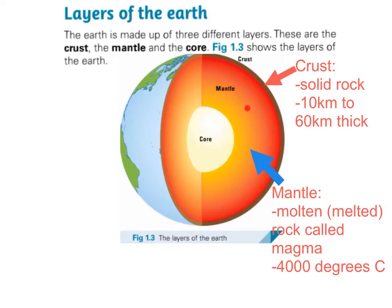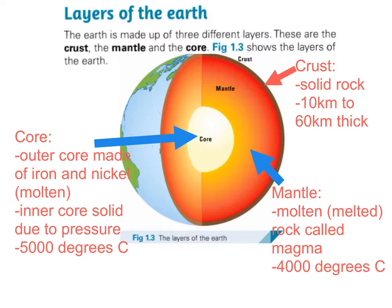The middle layer of the Earth is called the mantle. It's made up of molten — which means melted — rock called magma, and the temperature can reach 4,000 degrees Celsius. The crust of the Earth, which is the outer layer, floats on top of the mantle. The core is made up of the outer core and the inner core. The outer core is made of iron and nickel and it is molten. The inner core is solid due to pressure. The core's temperature is over 5,000 degrees Celsius.